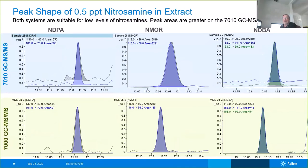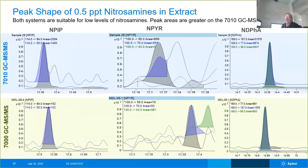Here are the other compounds listed in this study. You can see the 7000 performs very well, and the 7010 has an increase in area counts for each one at the 0.5 PPT level. Here are the final compounds we looked at, and you can see that both systems are able to identify the compounds of interest. For NPYR, there is a co-eluting peak, but because our sensitivity is clearly above 2.5 times the noise, we're able to identify this compound with both the qualifier and the quantifier.